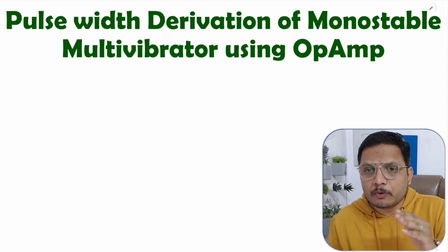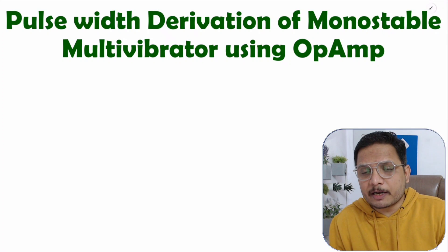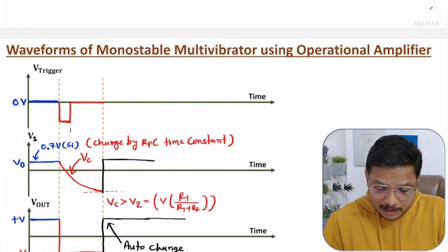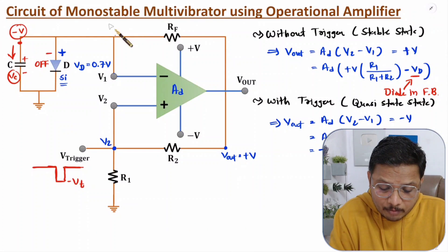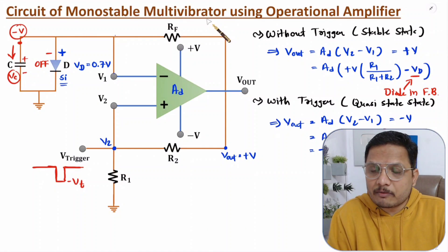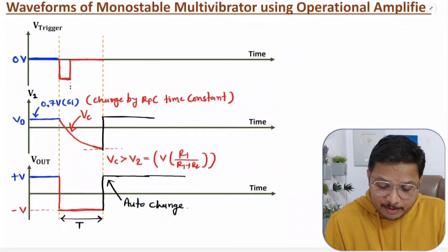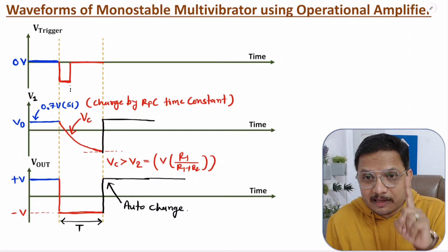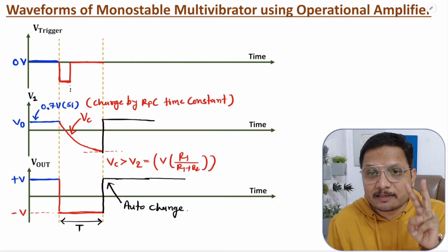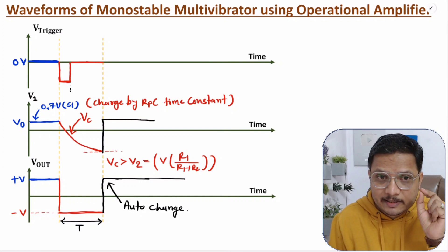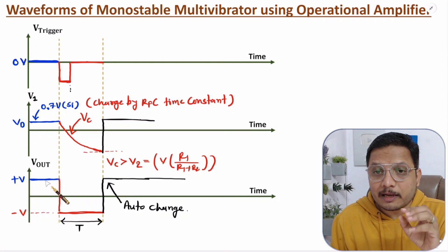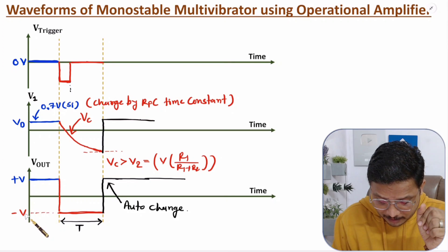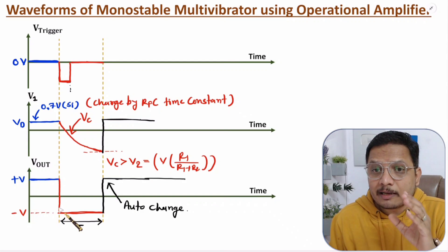In that video, I have explained the complete working of monostable multivibrator using operational amplifier. In that working, I explained this circuit functioning as a monostable multivibrator. Monostable multivibrator has two states — one is stable state and the second is quasi-stable state. Here the stable state is V+, so output is at V+, and quasi-stable state is V-. The stable state changes by an external triggering pulse.